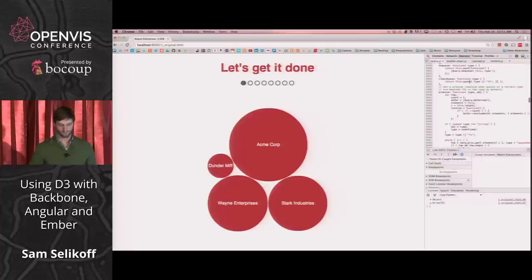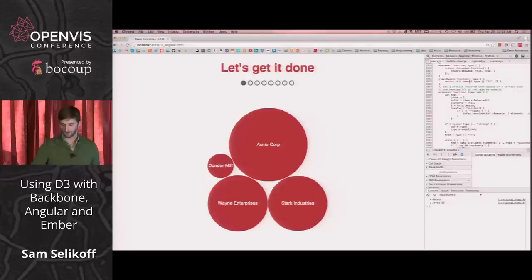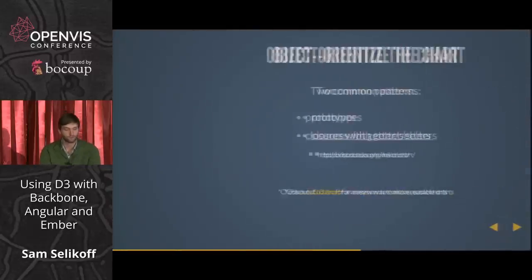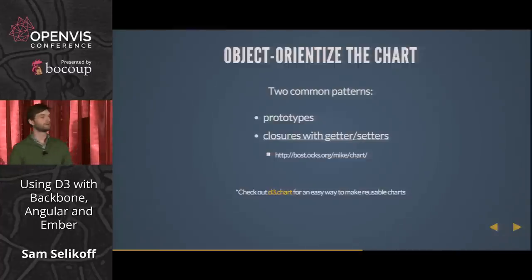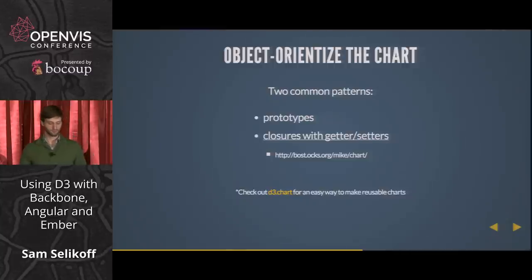We just got it done, we can wipe our hands clean and pass it off. But everything — when you're building applications — complexity goes up, new features come in and you need to build something that can scale. So this is just the first solution. We want to make it object-oriented. Instead of just copying and pasting procedures, we want to object-orientize our chart. In JavaScript, there are two patterns: you can use prototypes or closures with getter/setters. Mike has an article about the latter because that's the pattern the D3 library itself uses.